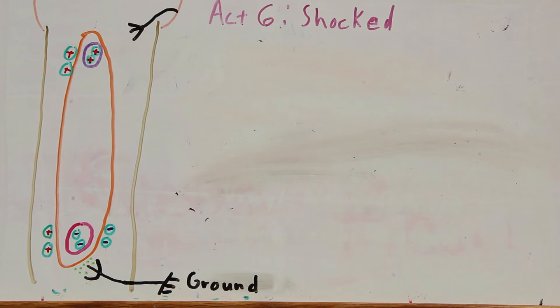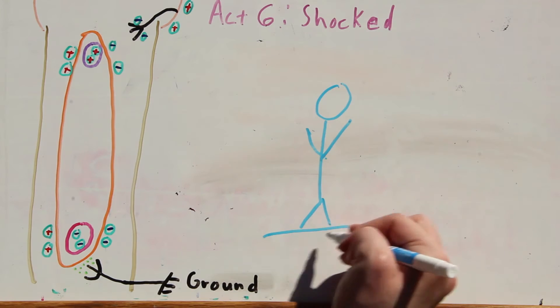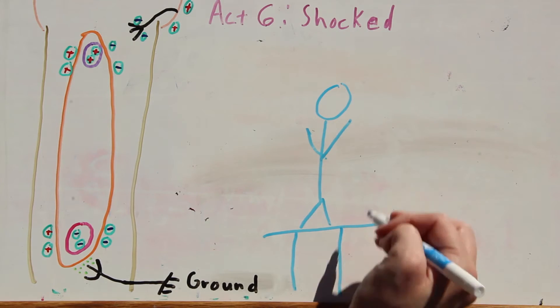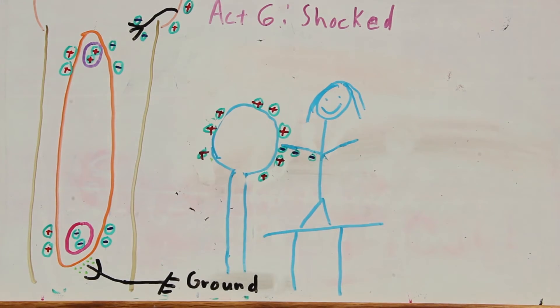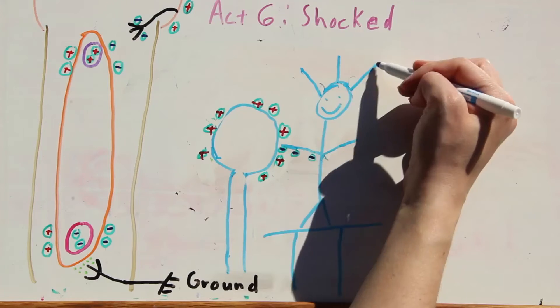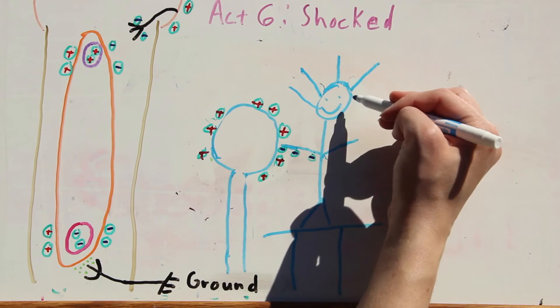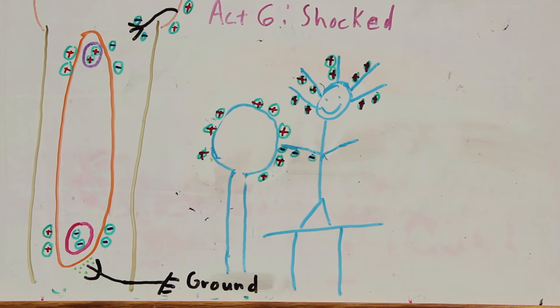Then the belt is sent back down to the lower roller, negatively charged. This depletion of electrons leaves the outside of the dome positively charged. And when you stand on an insulated surface and put your hand on the dome, the electrons travel from you to the dome. This makes your hair stand on end because they are positively charged and repelling each other.